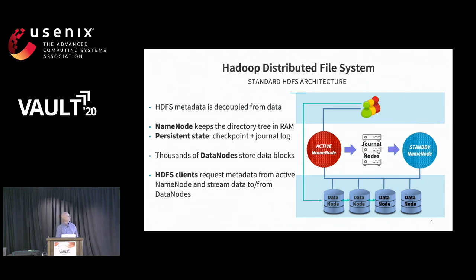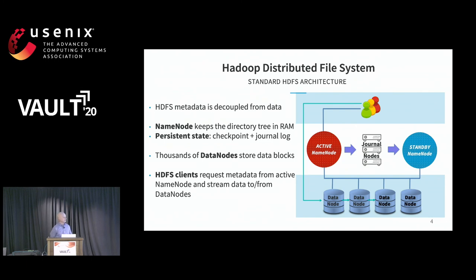Hadoop Distributed File System is a non-POSIX file system. It is highly scalable and still has hierarchical metadata. The metadata is stored in files and directories on a single server called the name node. With HA, we have one active name node, one standby node, and journal nodes play the role of distributing journal transactions from active to standby. All the files are represented in the active name node in memory, so naturally the size of memory is a scalability factor.